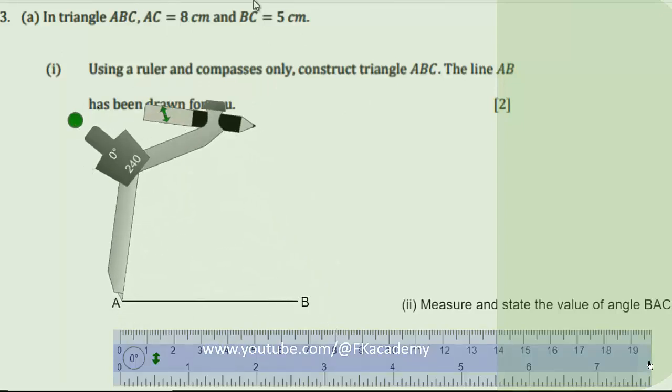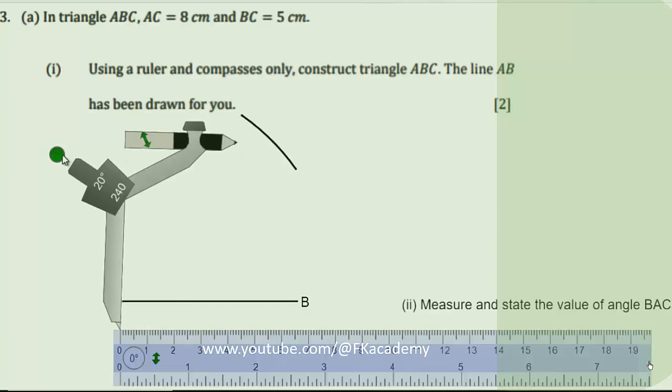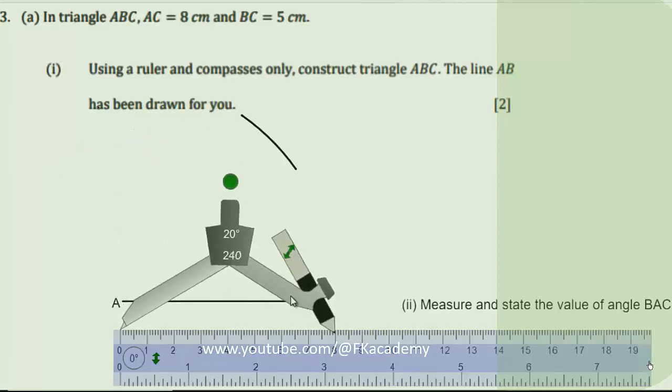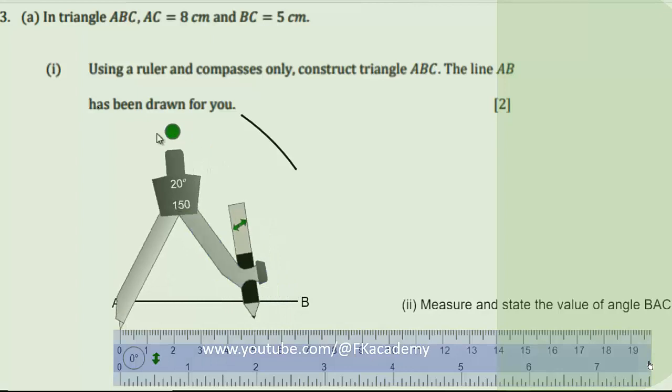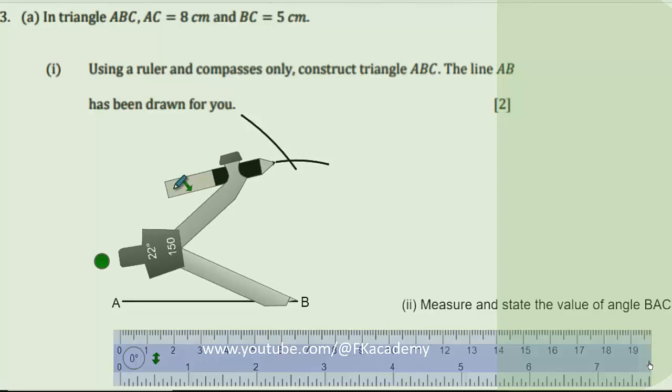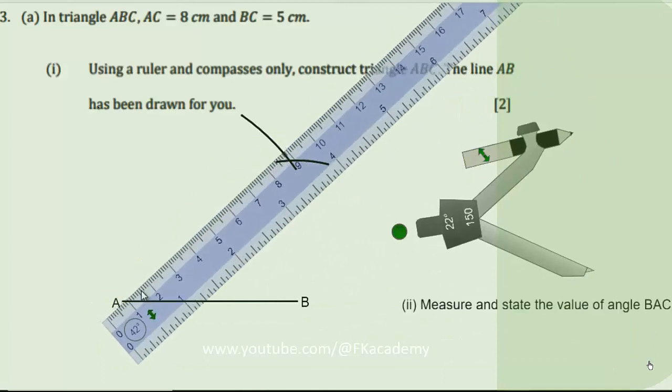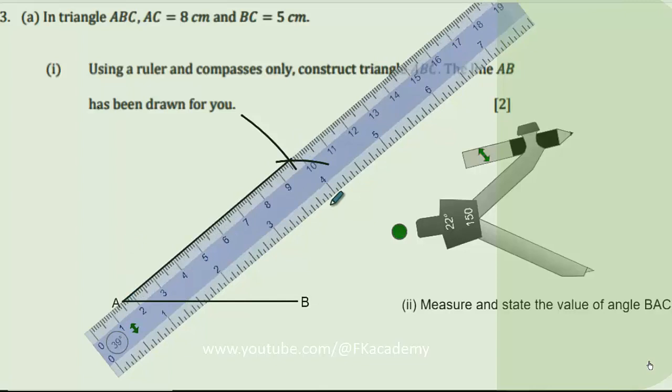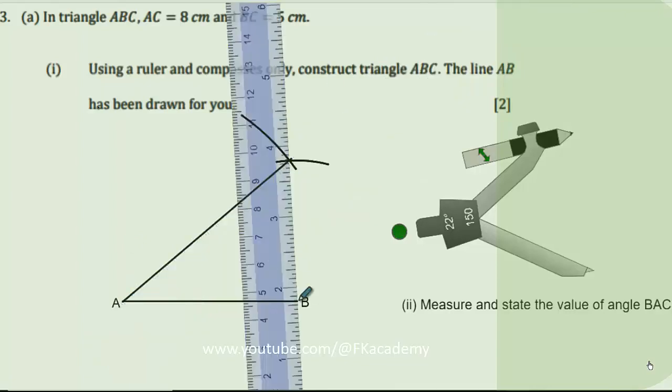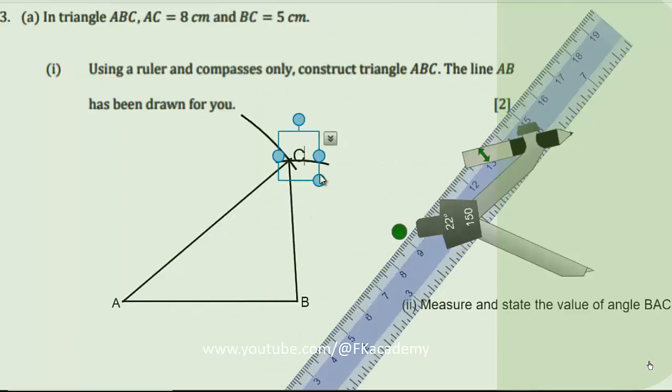Then BC must be 5 centimeters. We measure 5 centimeters on the ruler, put the compass point at B, then draw another arc to intersect the first arc. The point of intersection is C, so we now connect AC and BC as well.